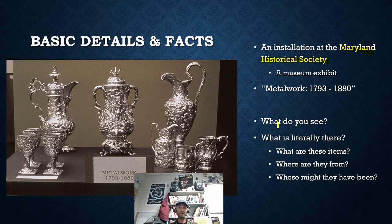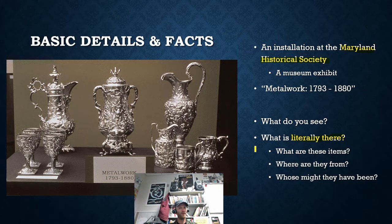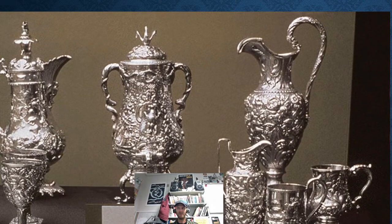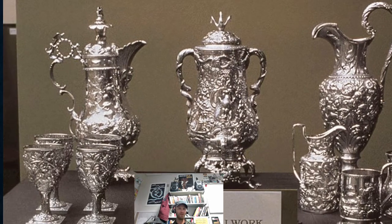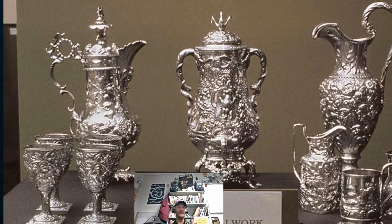The questions are: what do you see, what is literally there? You might notice that it's silver, that it's well-polished and taken care of, that it has all these very ornate designs on them. It obviously took a lot of work to create these. A lot of craftsmanship went into the creation of these, and also continually a lot of care went in to create them and take care of them.